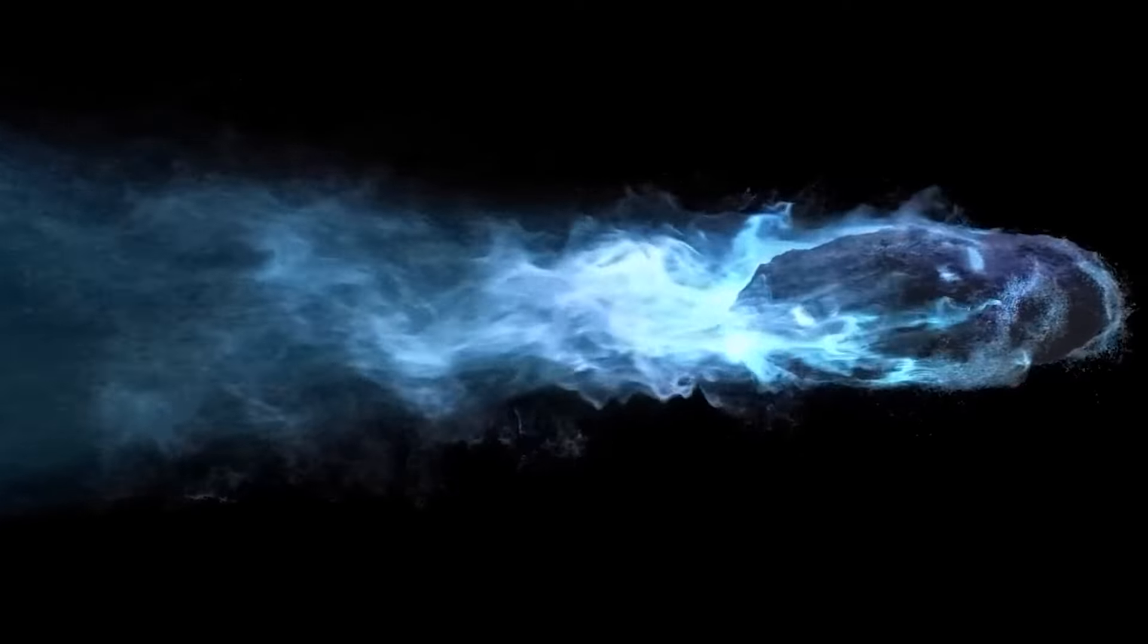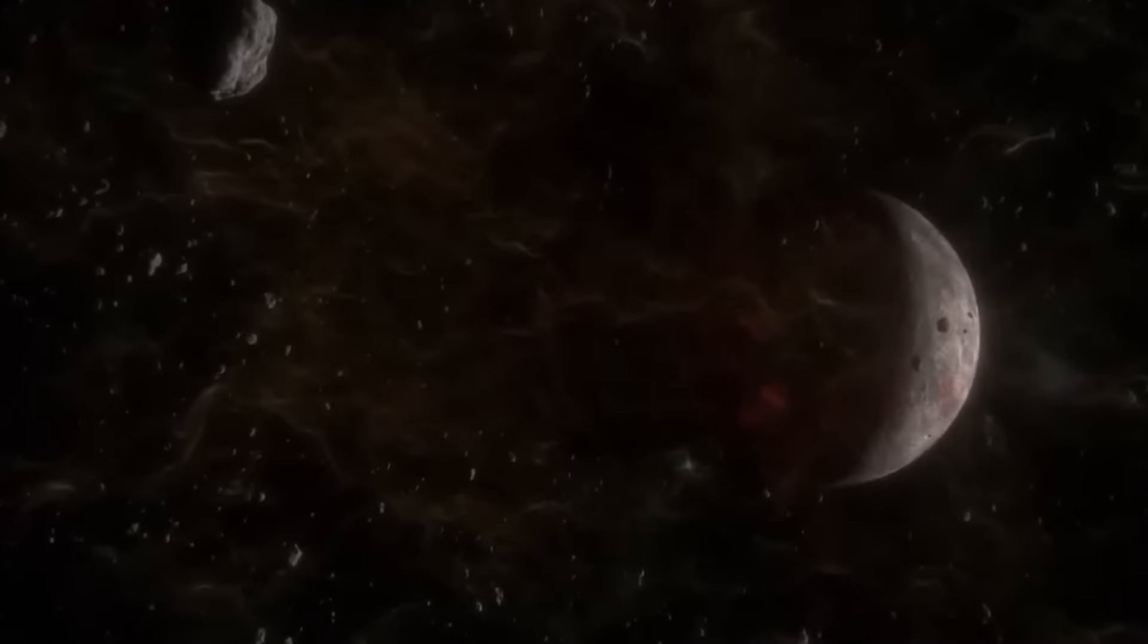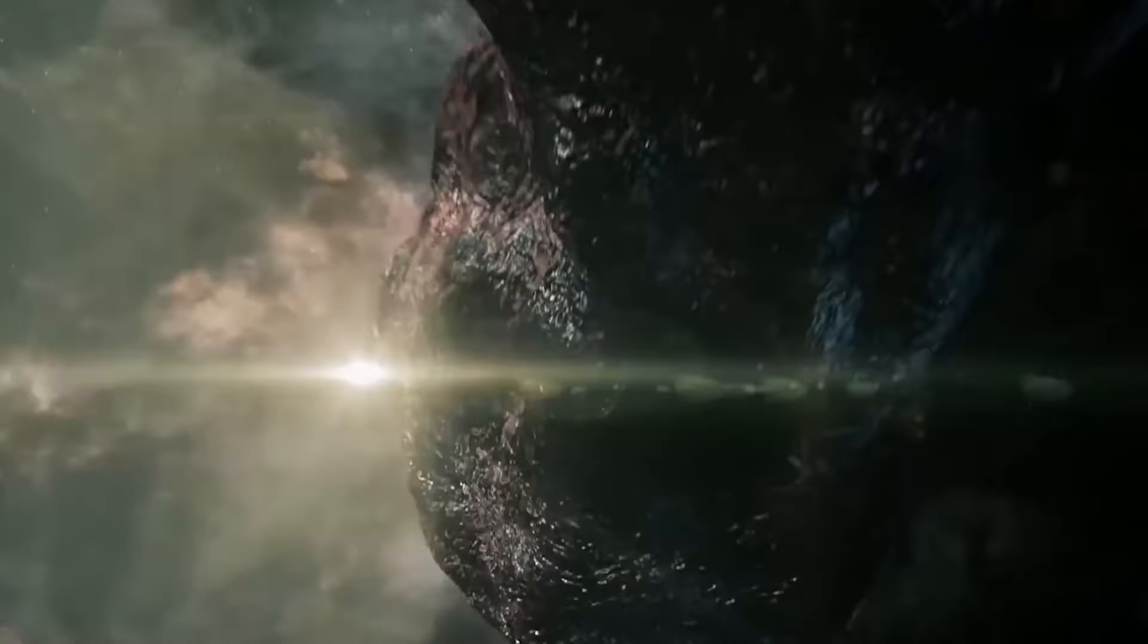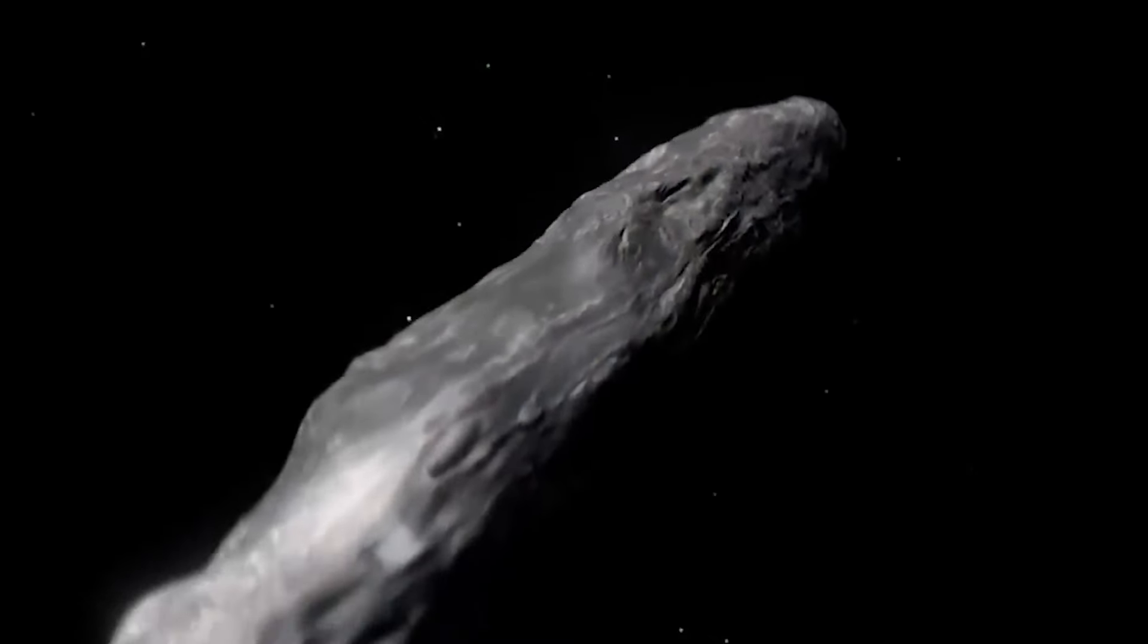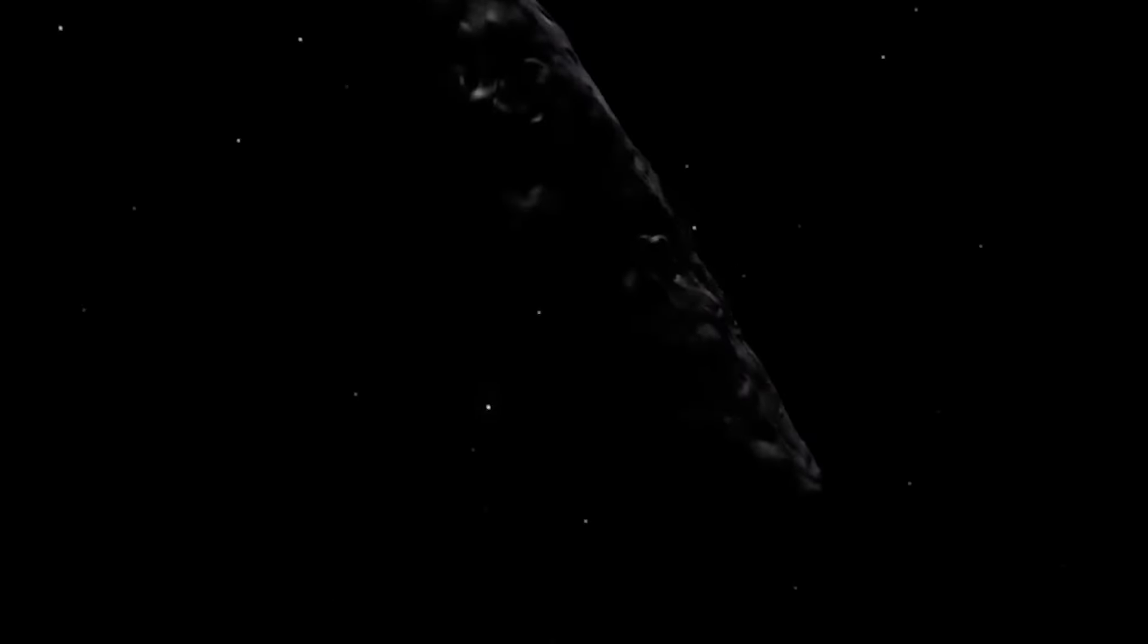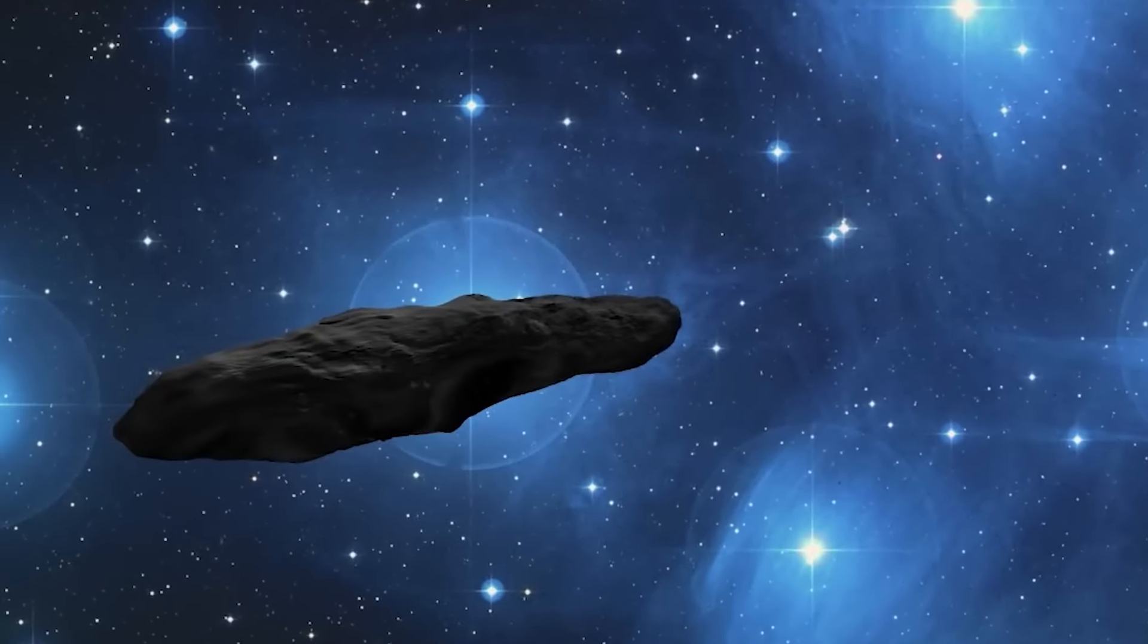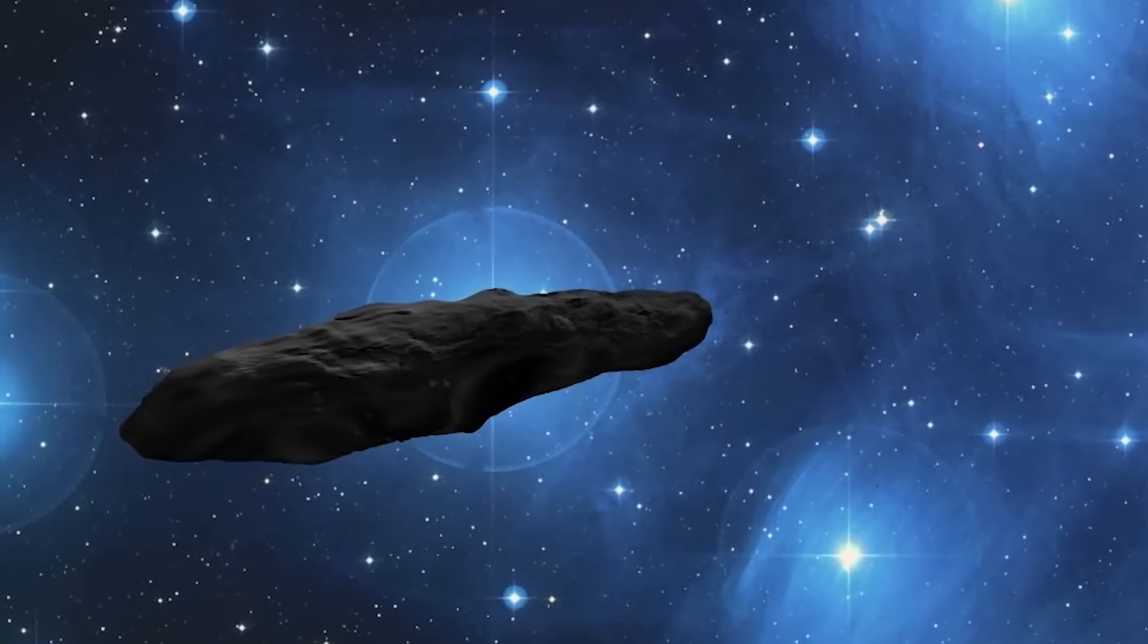If this hypothesis turns out to be true, it is likely that the gas released by Oumuamua is hydrogen, the lightest and most abundant element in the entire universe. Furthermore, given the relatively low temperatures of Oumuamua compared to that of the Sun, it is likely that some of the hydrogen released is in its molecular form rather than in its atomic form.